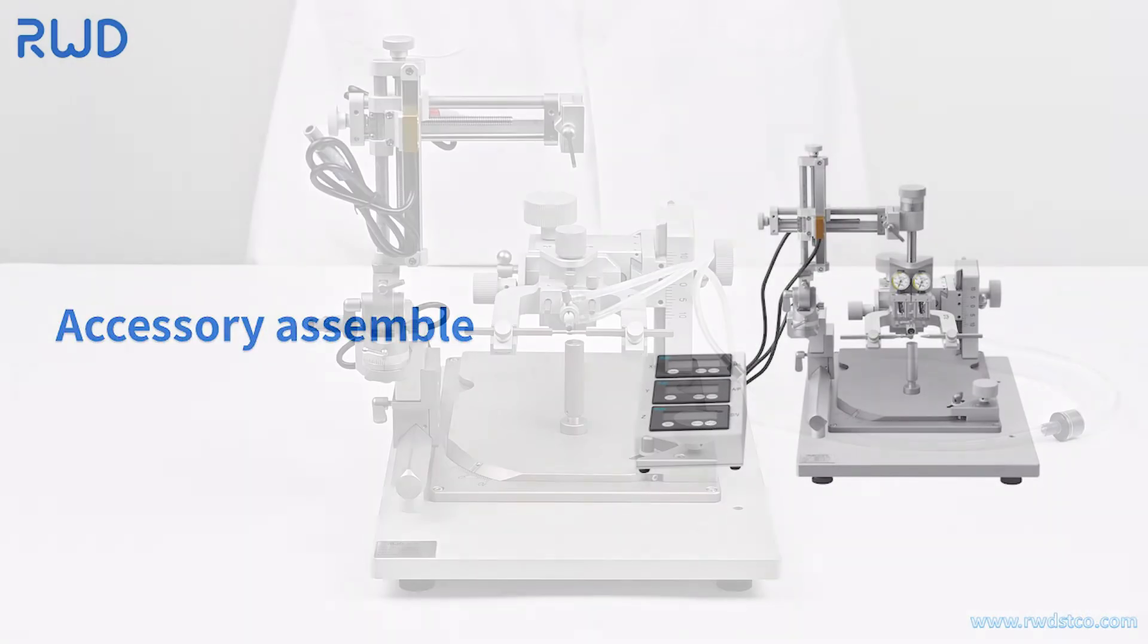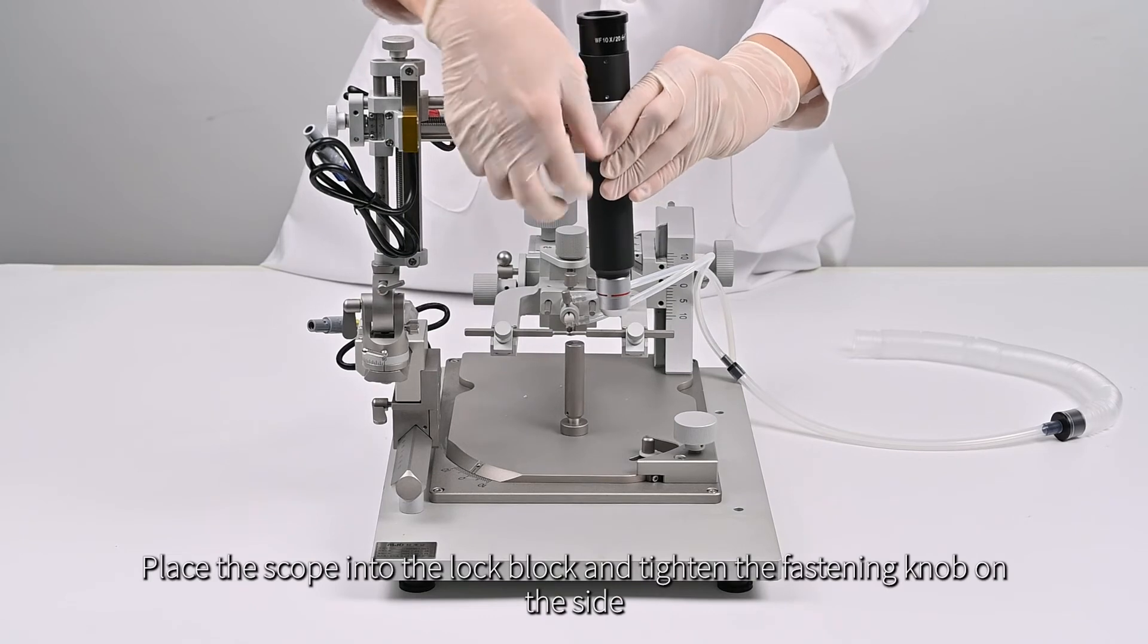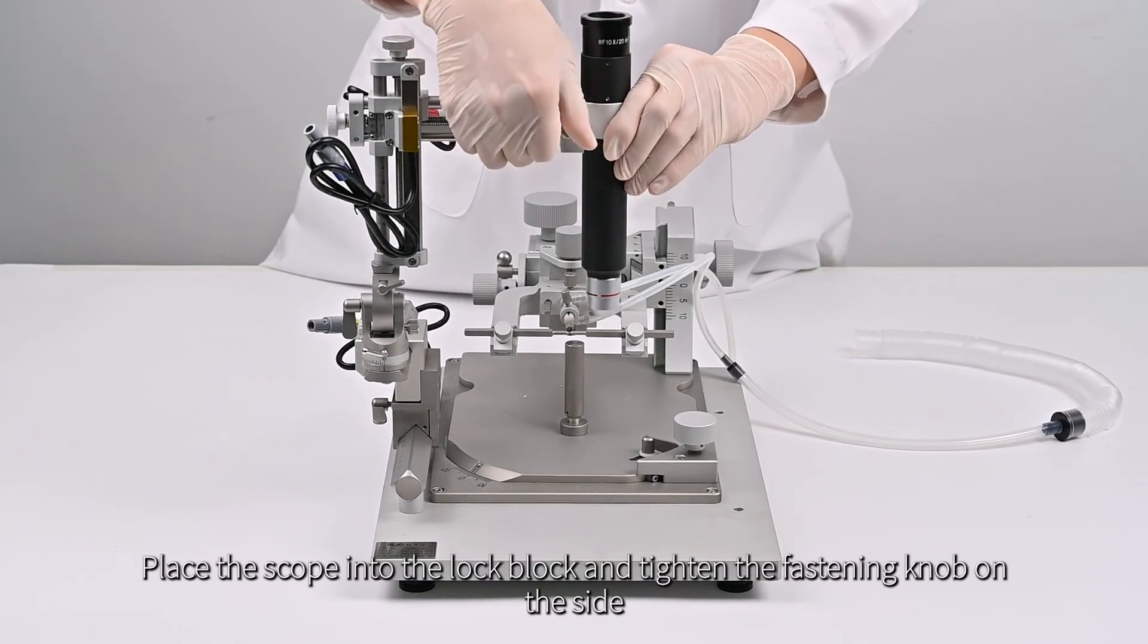Accessory Assemble. Take out the centering scope. Place the scope into the lock block, and tighten the fastening knob on the side.